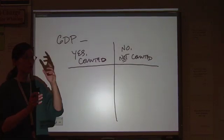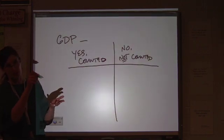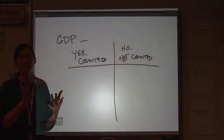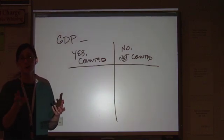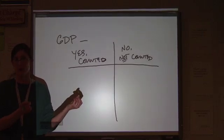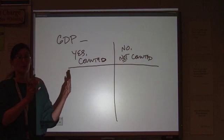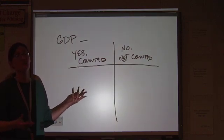There are two ways to do that. We already talked about it. The expenditures approach, C plus I plus G plus X of N, and the income approach where you are adding together the money people make. The money people make should be equal to the money that people earn. The money you spend should be equal to what people earn because it is earned by somebody when you spend it.